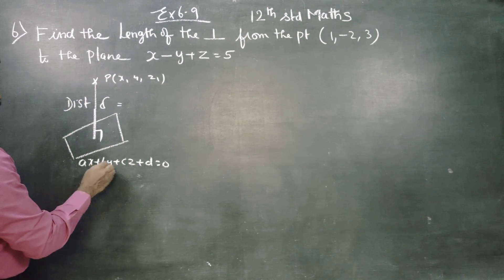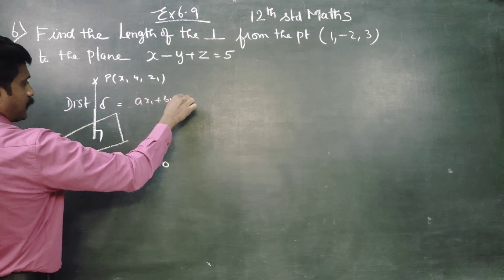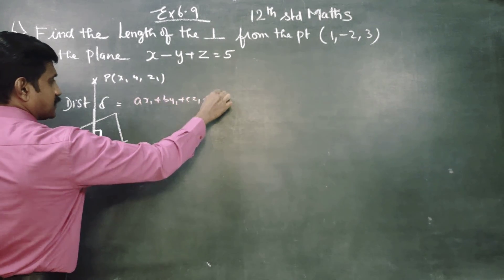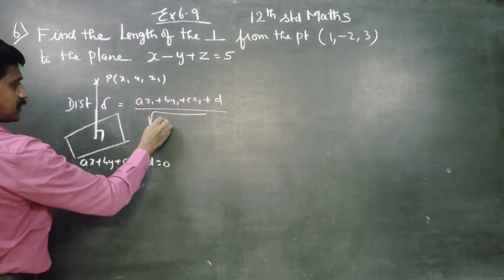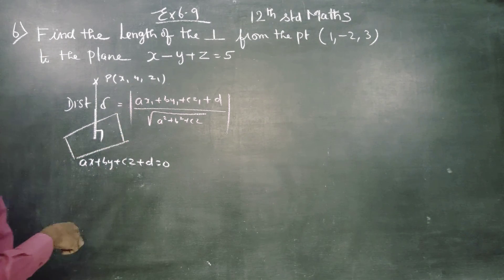The distance is (ax1 + by1 + cz1 + d) divided by square root of (a² + b² + c²). This is the coefficient. Positive. This is the distance formula.